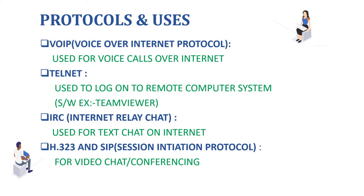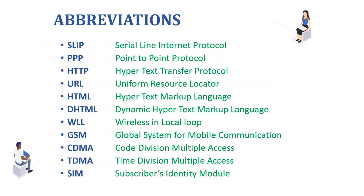VoIP — Voice over Internet Protocol — is used for voice calls over the internet. Telnet is used to log on to a remote computer system. IRC — Internet Relay Chat — is mainly used for text chat on the internet. SIP — Session Initiation Protocol — and H.323 are used for video chatting and conferencing.